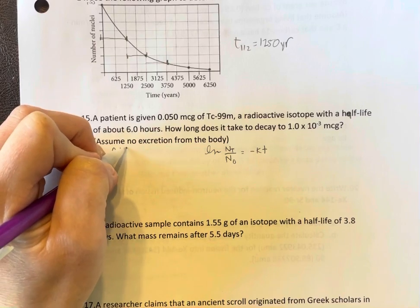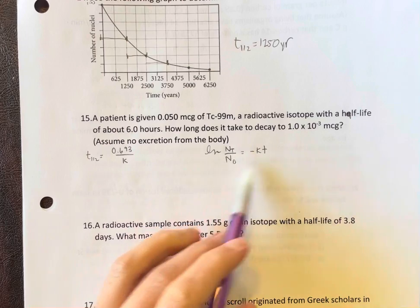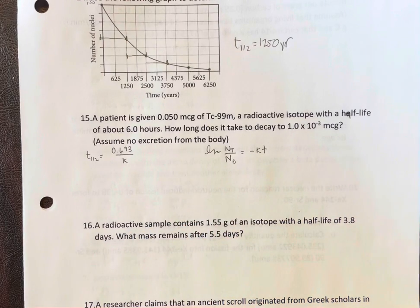And that's 0.693 divided by k. If you don't remember that, you can use this wonderful equation here - you'll get the same thing, okay?